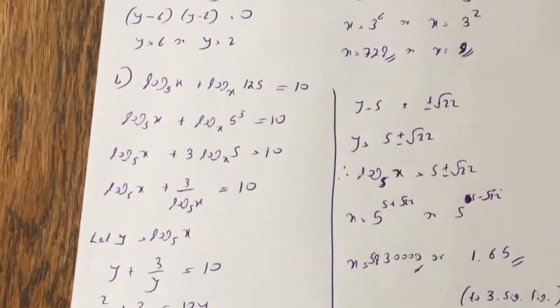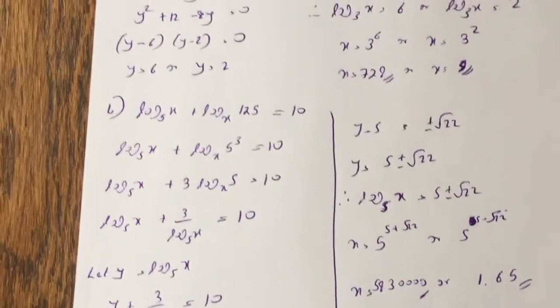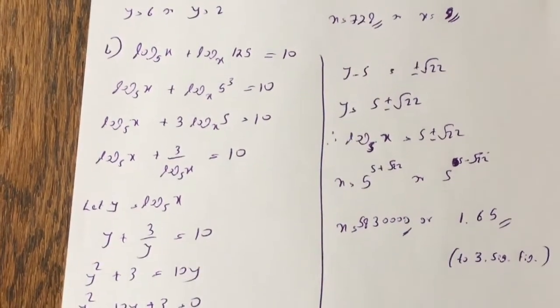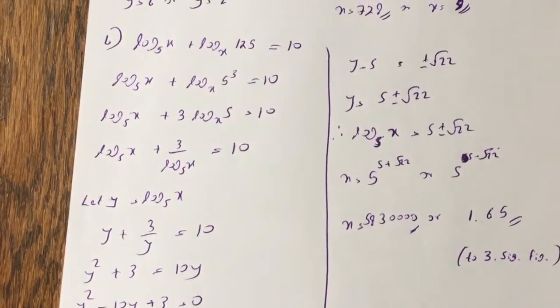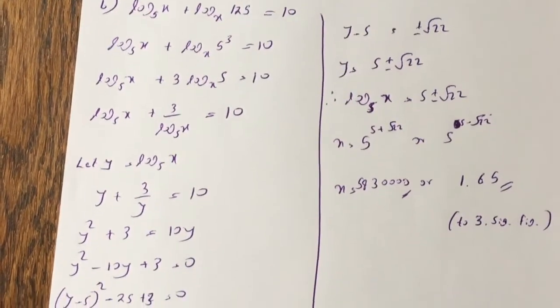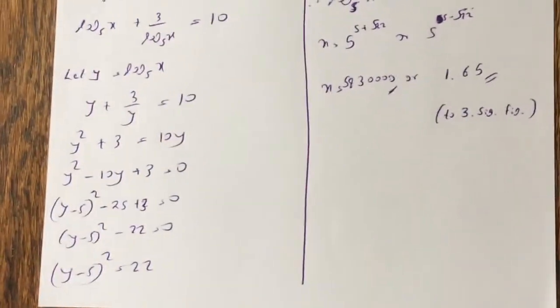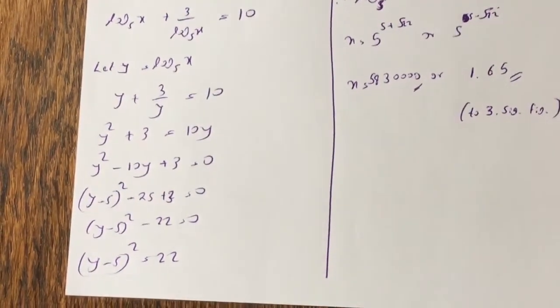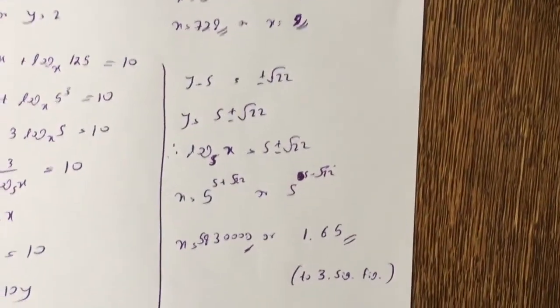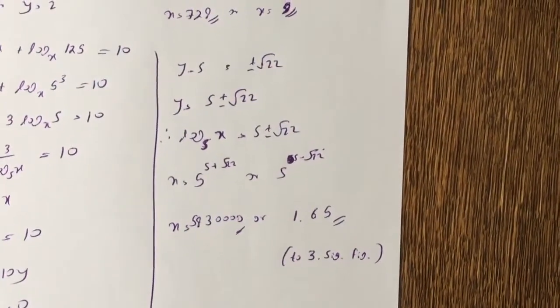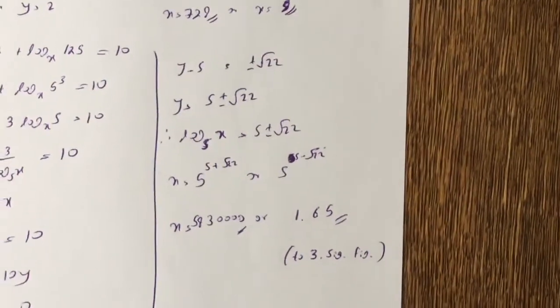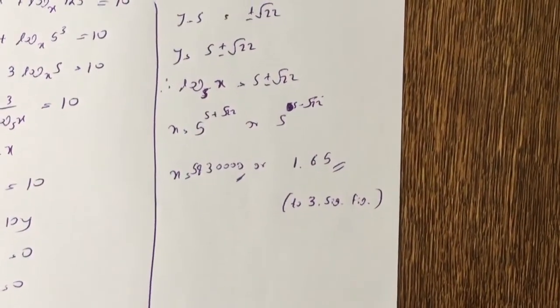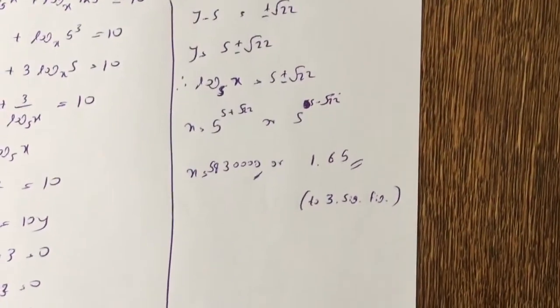Next question is similar, so you have a 125 here, which is 5 cubed, so you can put the 3 down, so I'm starting with line 3 already, so it's log base 5x plus 3 log base x 5 equals to 10, so change the base again, so it becomes log base 5x plus 3 over log base 5x equal to 10, y equals log base 5x, and then you get a quadratic again, but this time it does not factorize. People may use the quadratic formula, but I think it's quite simple to use the completing the square here, as you see, y minus 5 squared minus 25 plus 3 equal to 0, so y minus 5 squared equals 22, you come over here, y minus 5 equals plus or minus 22, so y equals 5 plus or minus root 22, so log base 5x equals 5 plus or minus 22, so x equals 5 to the power of 5 plus root 22, or 5 minus root 22, so x equal to 5,930,000, or 1.65 to 3 significant figures.